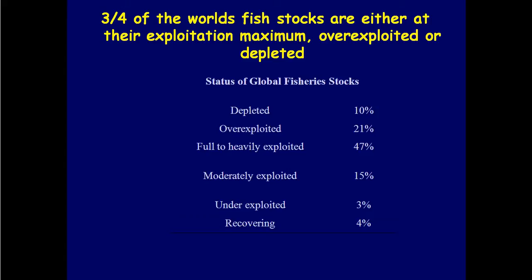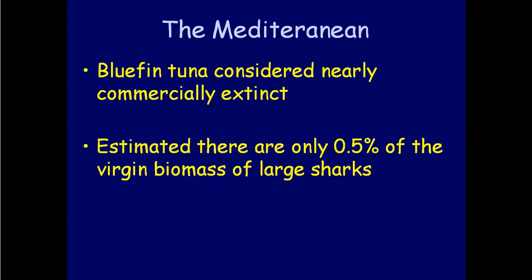That 78% fully to over-exploited still doesn't paint the whole picture, because 4% are so depleted they are in a recovering position. We're in pretty bad shape overall — there's not a lot of room for expansion, and probably a lot of areas where we actually need to stop producing as much as we are.